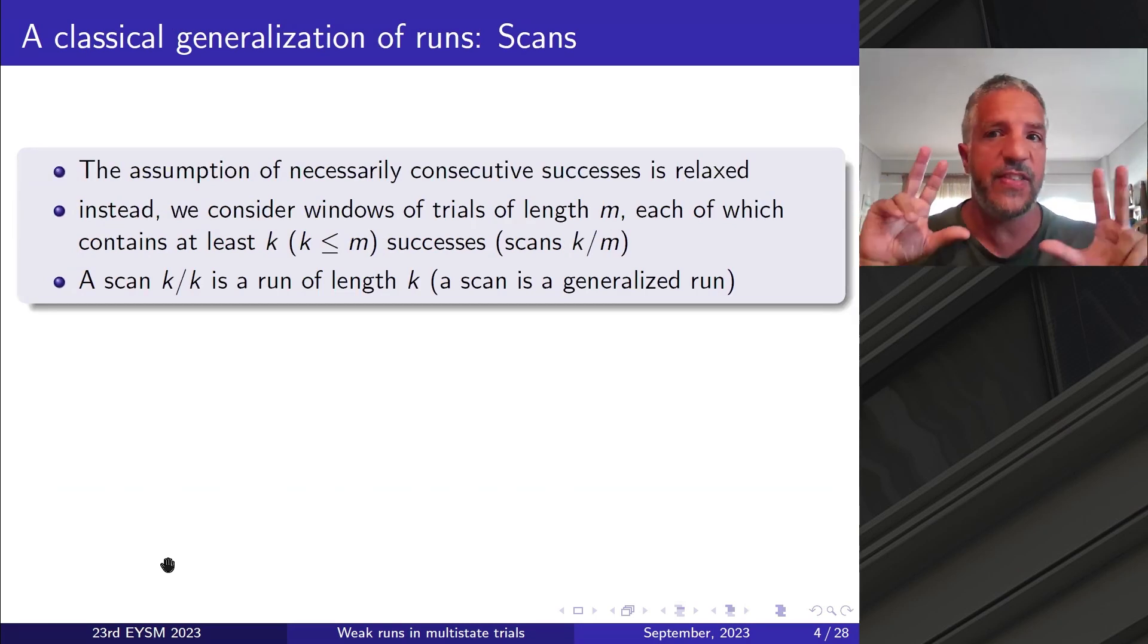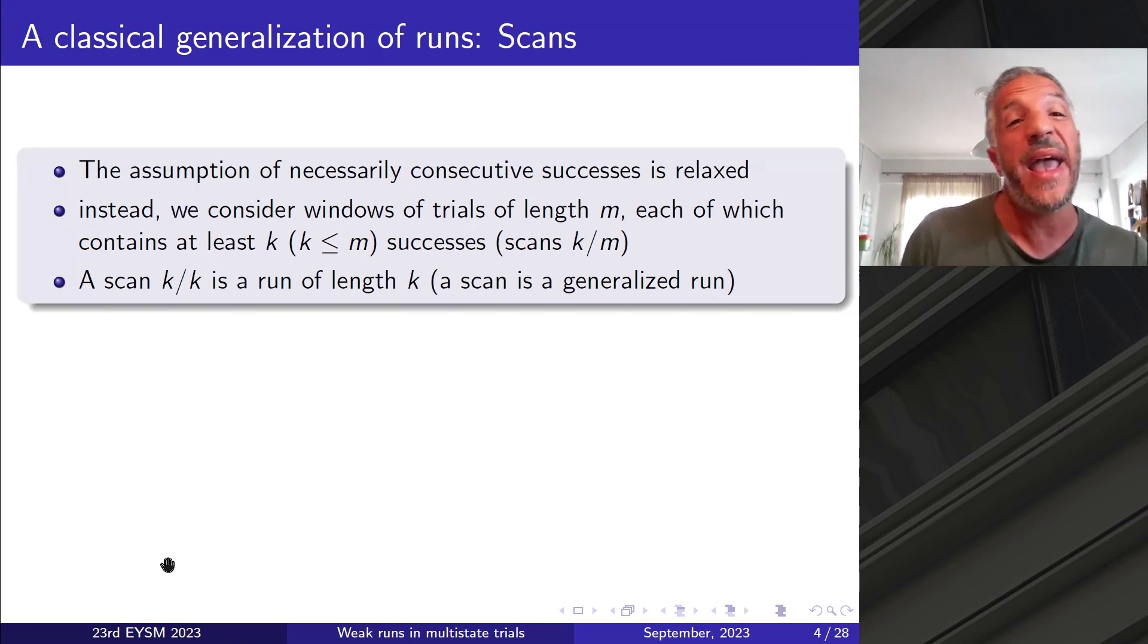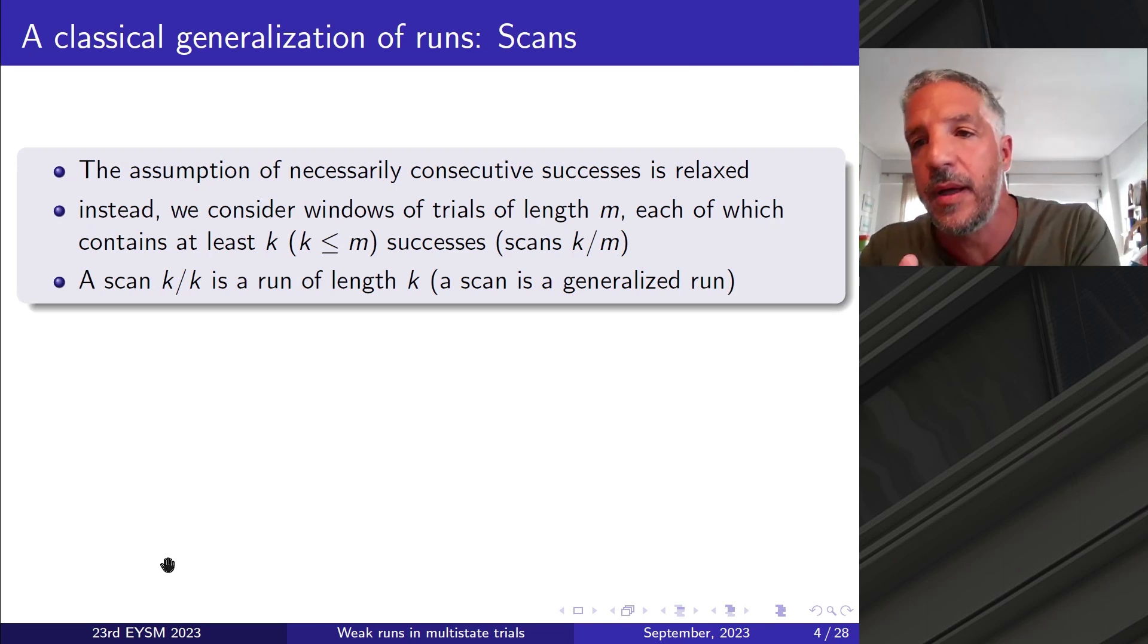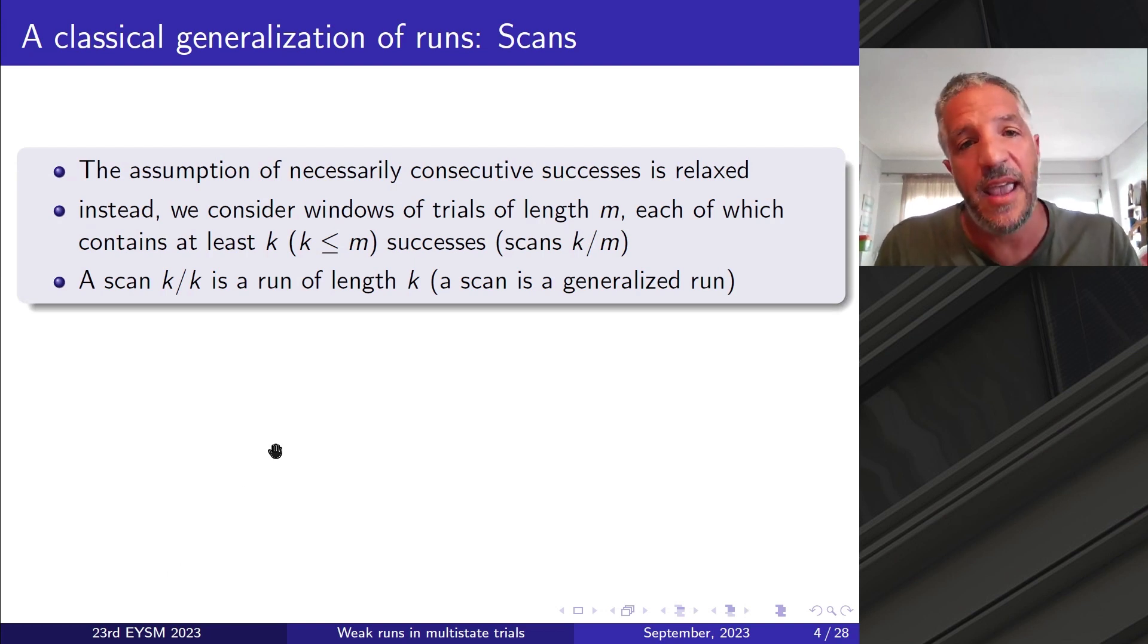So I've talked to you about the first generalization, which is from the classical distributions to distributions for k runs. We may make a further generalization, which is extensively studied in literature, and it is from runs to scans. So now the assumption of necessarily consecutive successes is relaxed. Instead, we consider windows of trials of length m, each of which contains at least k successes. Pay special attention that the successes now are not necessarily consecutive. In this way, scans k out of m arise. And a scan k out of k is, of course, a run. So this is why a scan is a generalized run.